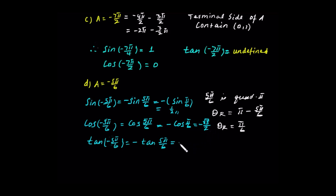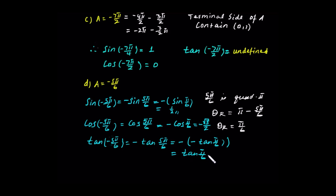Tangent in the second quadrant is negative. So tan of negative 5π/6 equals negative tan(π/6). That's negative times negative, which is positive. Tan(π/6) at 30 degrees is 1/√3, rationalized to √3/3.